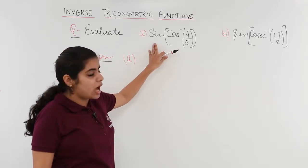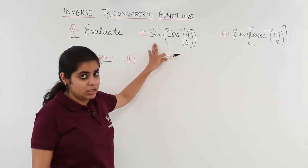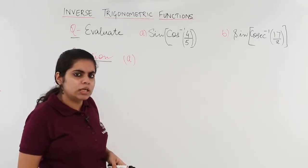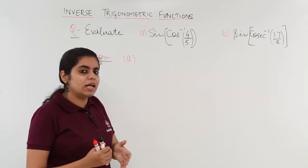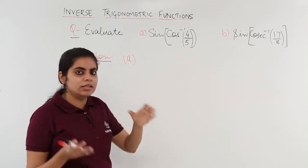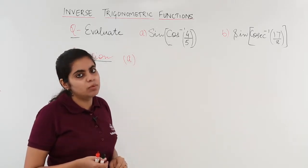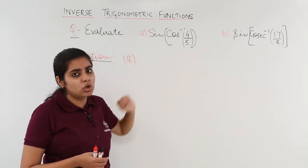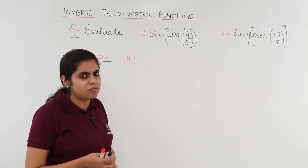The first part is having outside sine, inside cos inverse. This story becomes simple when I have sine and sine inverse, they cancel. The answer is simply what is in the bracket. But if I have one sine, one cos inverse, some things have to be changed.